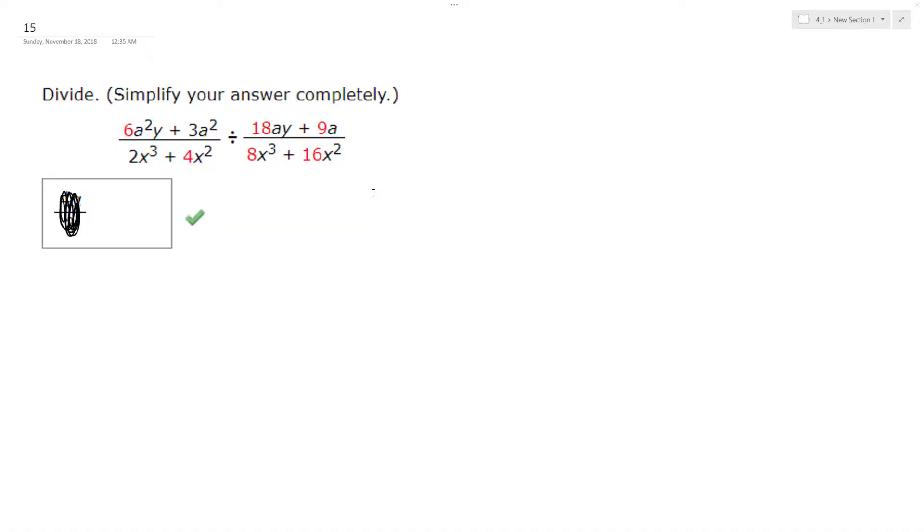Alright, so I'm going to divide and simplify, and then what I can actually do is rewrite the second term, so it's 8x cubed plus 16x squared over 18ay plus 9a.